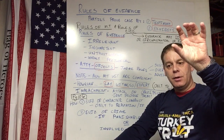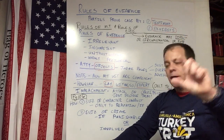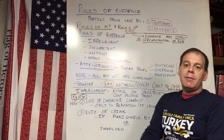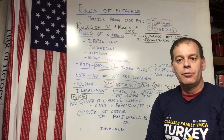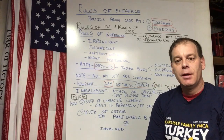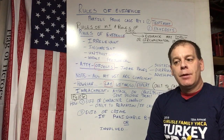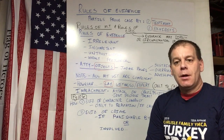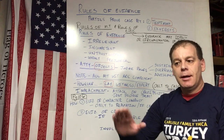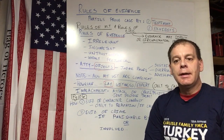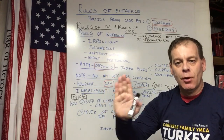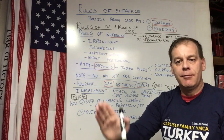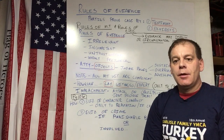Sometimes the judge will take it under advisement, which means they're not going to make a ruling on it right now — basically allowing the question to proceed without formally overruling. They may note the objection and rule on it a couple of questions later. So: sustained means you can't ask that question, overruled means continue, and under advisement means continue.